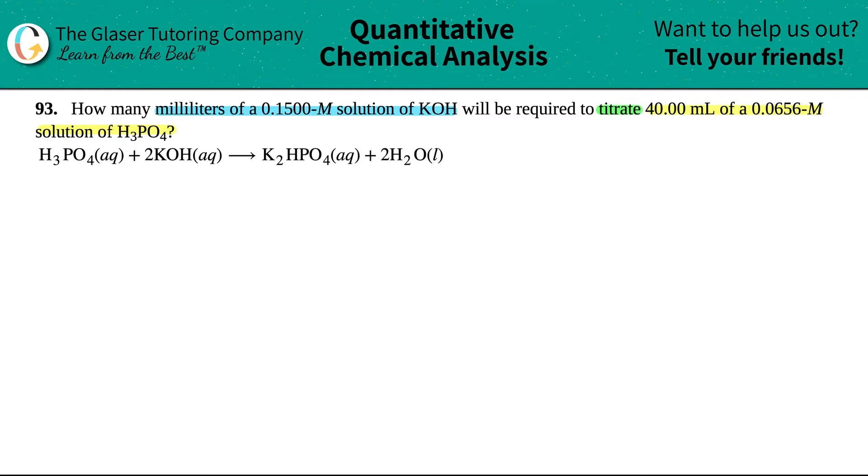Now I see the word titrate. We've done tons of problems like this where we're titrating, mixing an acid with a base. Usually we love to use that quick little formula, MAVA equals MBVB, where you multiply by the number of H pluses and OH minuses. But you can only use that formula if you have a strong acid and a strong base. The math for that formula works best with strong acids and strong bases.